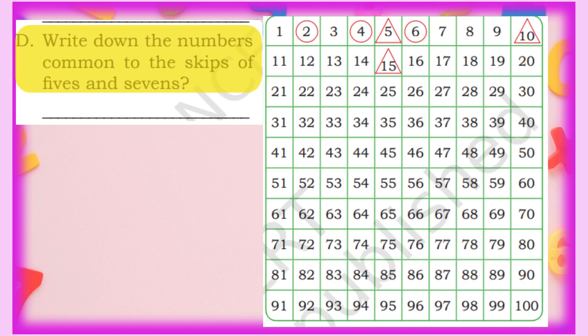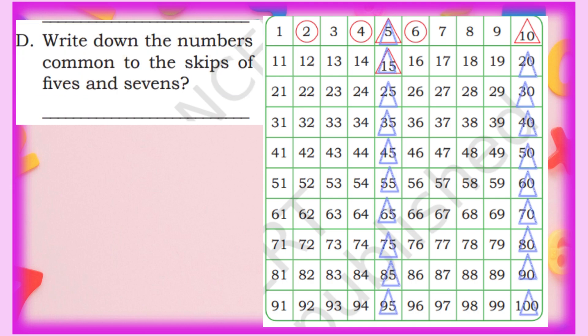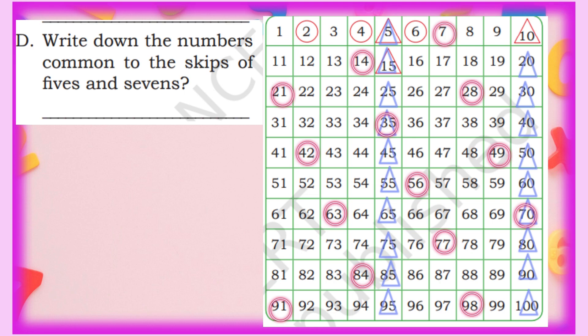Next question: write down the numbers common to skips of 5s and 7s. We already have triangles for 5s. For 7s, we draw circles: 7, 14, 21, 28, 35, 42, 49, 56, 63, 70, 77, 84, 91, 98. Now we find numbers common to both sequences. We can see that 35 and 70 are the two numbers that appear in both the 5s and 7s counting. If you practise this way, it will become easy.